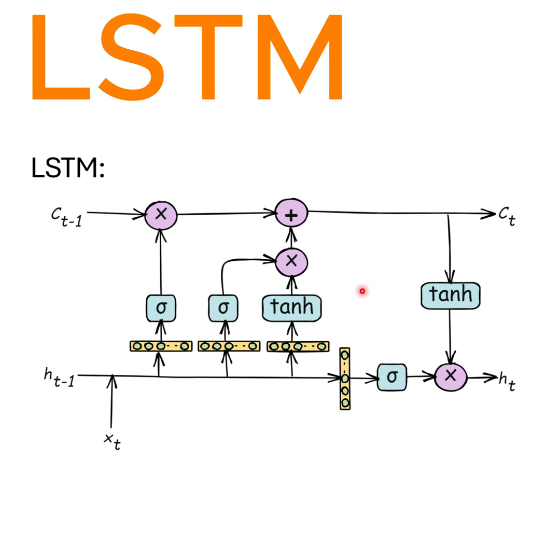An LSTM cell is composed of four main components: the cell state, the forget gate, the input gate, and the output gate. These gates regulate the flow of information through the entire LSTM cell.